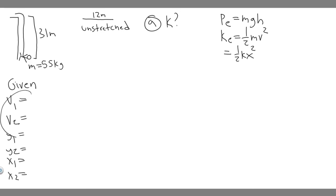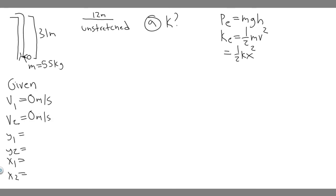Starting with velocity: V1 is the velocity at the beginning — they're starting from rest, so V1 equals zero meters per second. V2 is the velocity at the bottom when the bungee cord is fully stretched. At that point they're also not moving because they're held in place by the cord's force, so V2 also equals zero meters per second.